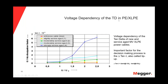This slide shows voltage dependency of the Tan Delta. The red reference cable is new, yellow is slightly service-aged, green is moderately service-aged at two years, then moderately service-aged at three years, and strongly service-aged. The important factor for the decision-making process is the Tan Delta, also called tip-up. Looking at 1.5 times U0 for the aged cable, you can see a dramatic jump up from new to moderately aged to service-aged. These are the values that come into play.